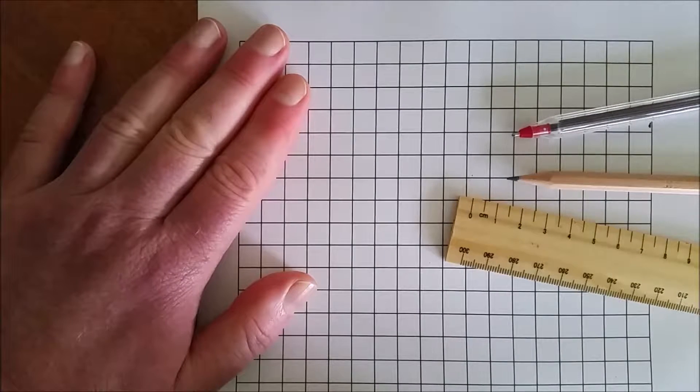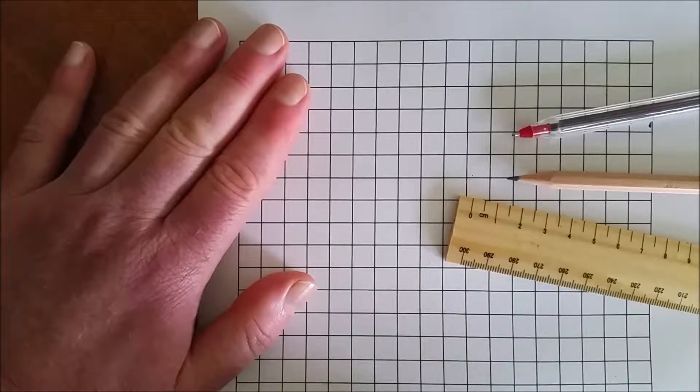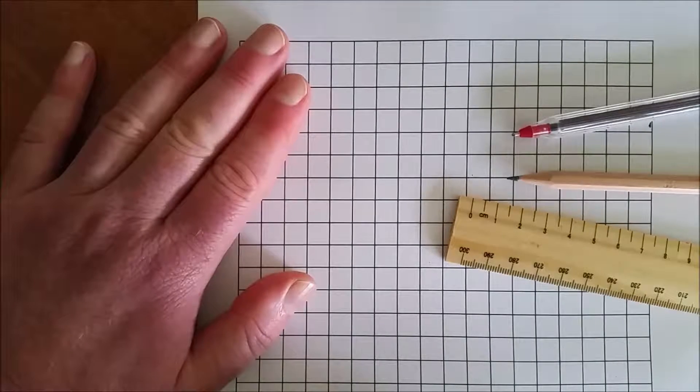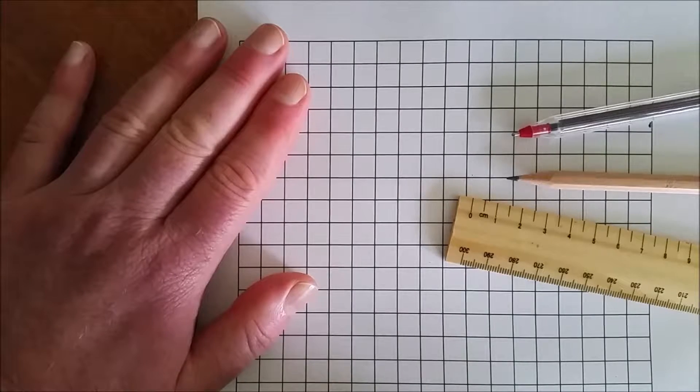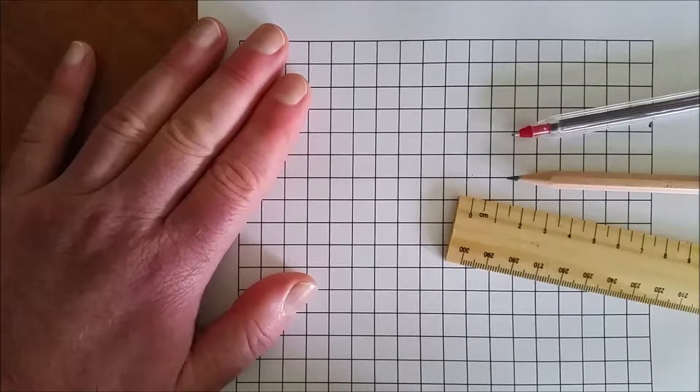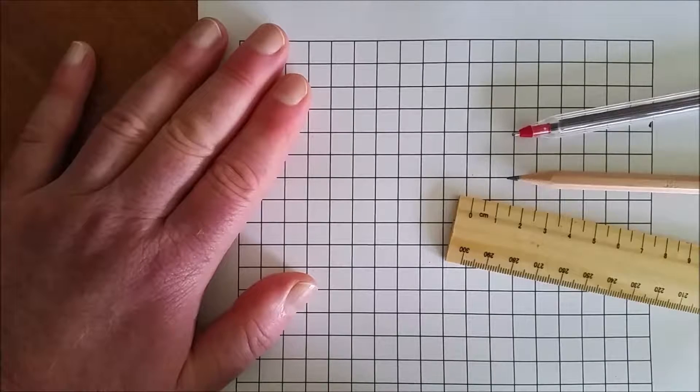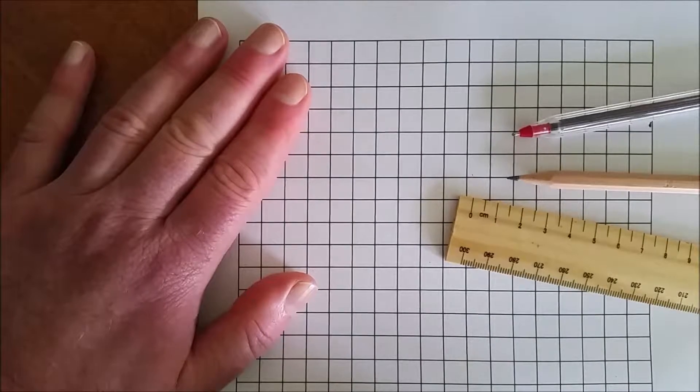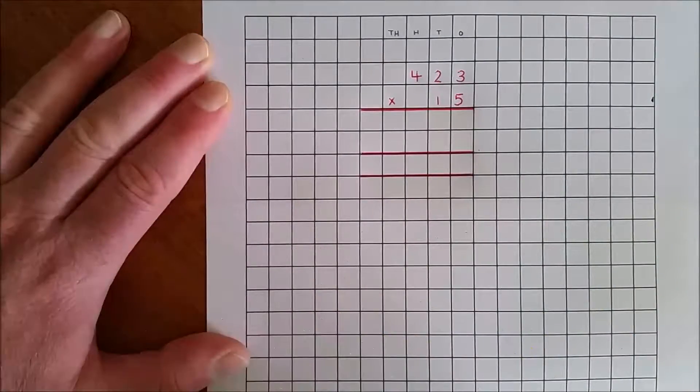The question is written in red pen with the working out done in grey lead. This assists in distinguishing between the question and the working out, and allows me to erase my working if I make a mistake without erasing the actual question. This is the traditional method of multiplication with an emphasis on place value.